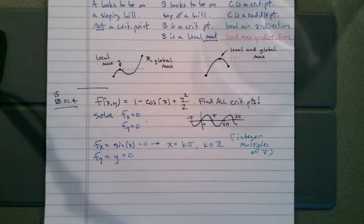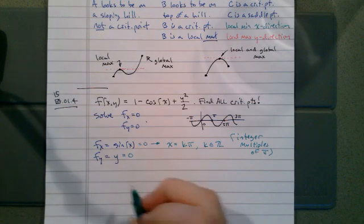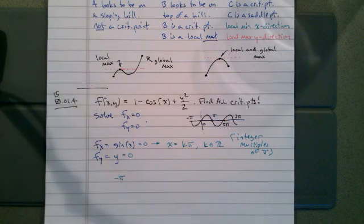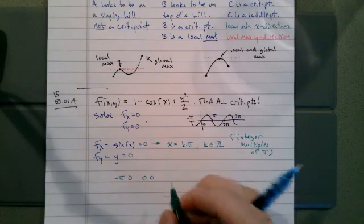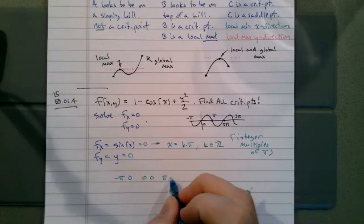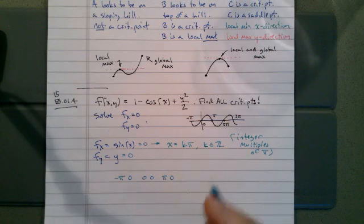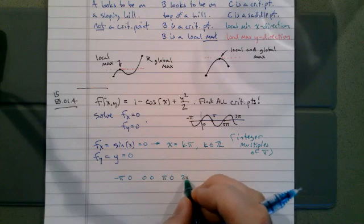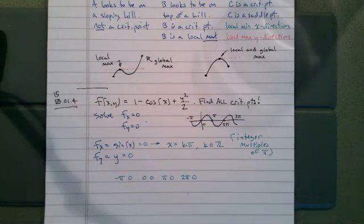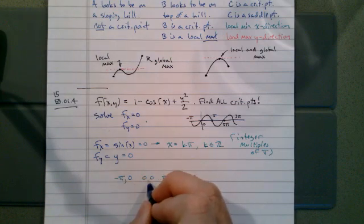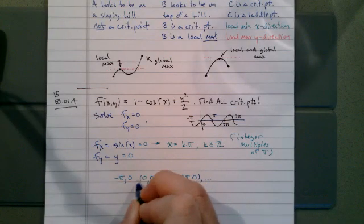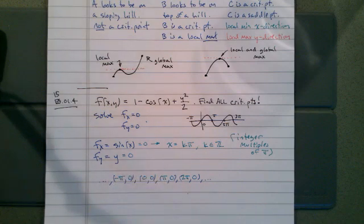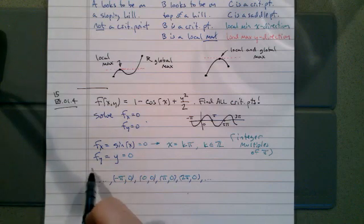So we're going to make all the combinations of integer multiples of pi with zero. So we'll have negative pi comma zero, and then zero comma zero, and then pi comma zero, and then 2 pi comma zero, 3 pi comma zero, and this pattern continues forever. So here are all our critical points.